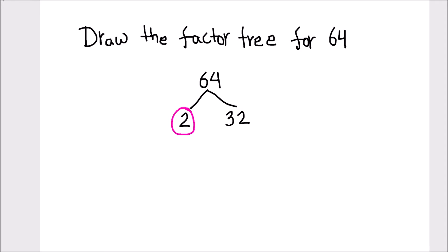Now let's find the factors of 32. 32 is also an even number — it can easily be divided by 2. So one of the factors of 32 is 2, and the other factor we can find by dividing 32 by 2. 2 times 16 is 32. We'll circle this prime number 2.